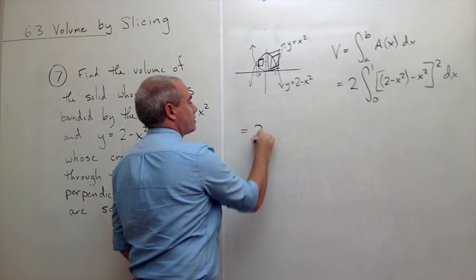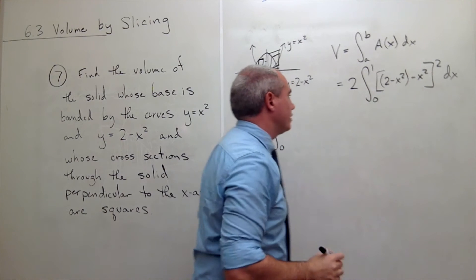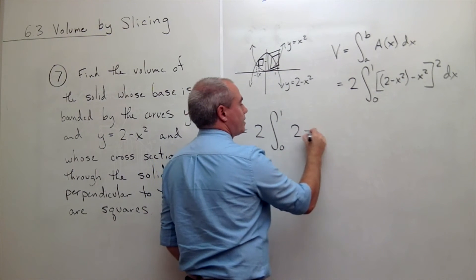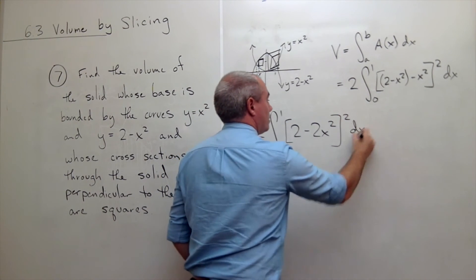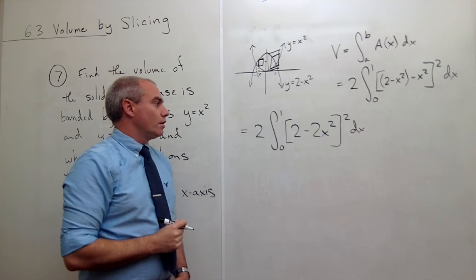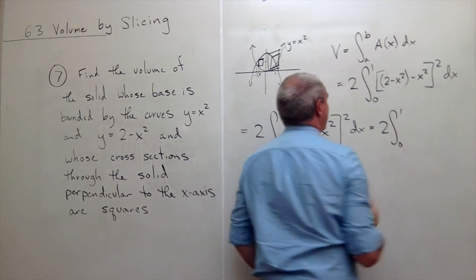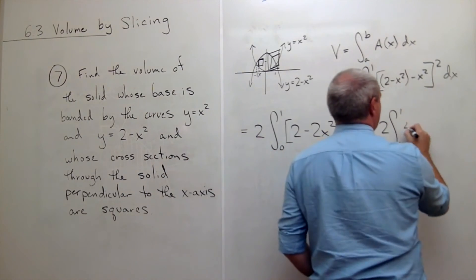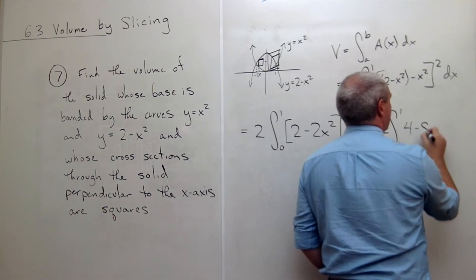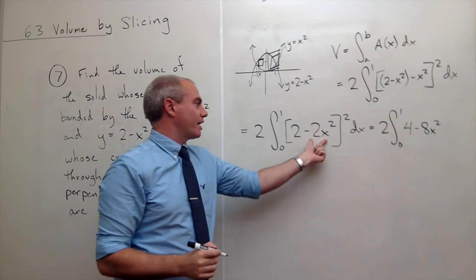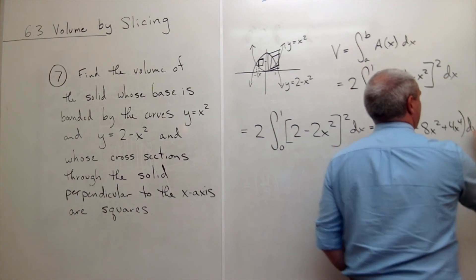This is 2 times the integral from zero to one of (2 minus 2x squared) squared dx. Let's expand that. Squaring gives us 2 times the integral from zero to one of 4 minus 8x squared plus 4x to the fourth dx.